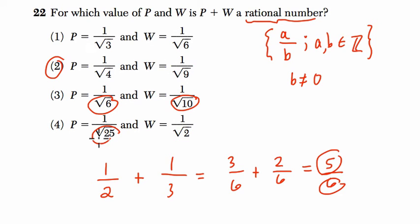Let's talk about choice 3. So we have irrational roots, 6 and 10. Once you add two irrational numbers, unless they're opposites, that result will be irrational.